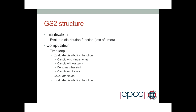Then it goes on to do the actual simulation. It has a time loop — a loop over steps — where you can set how many steps to run. Inside that loop, it evaluates the distribution function, then updates the fields based on that, and then evaluates the distribution function again and iterates. Inside the evaluation of the distribution function, it calculates non-linear terms, linear terms, collisions, and much more.